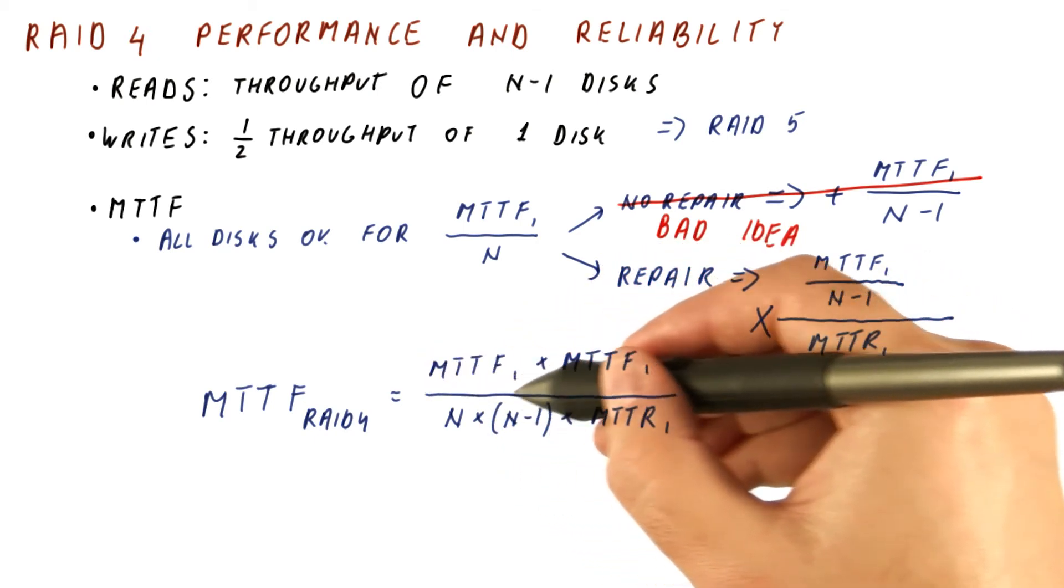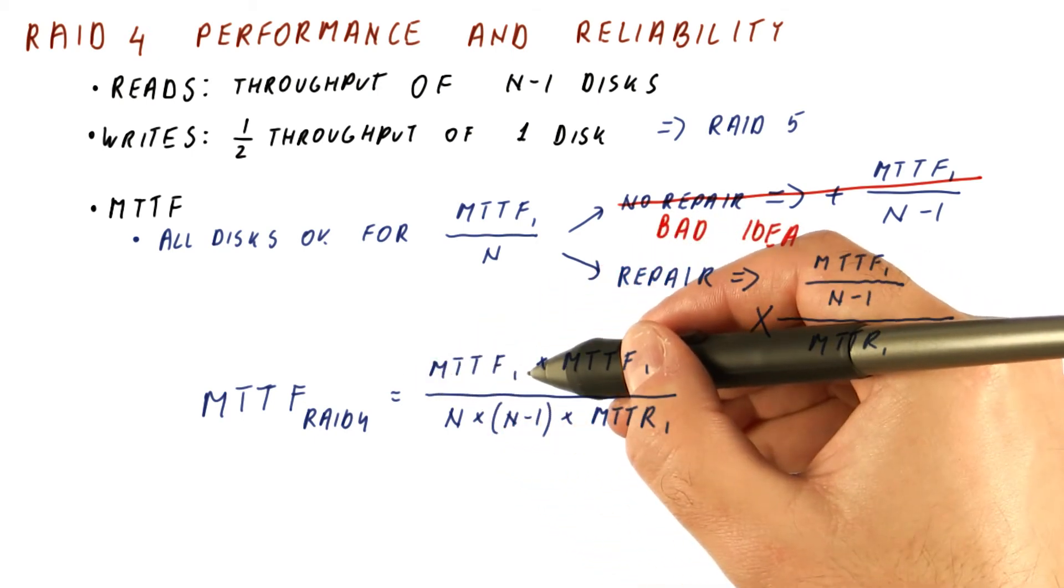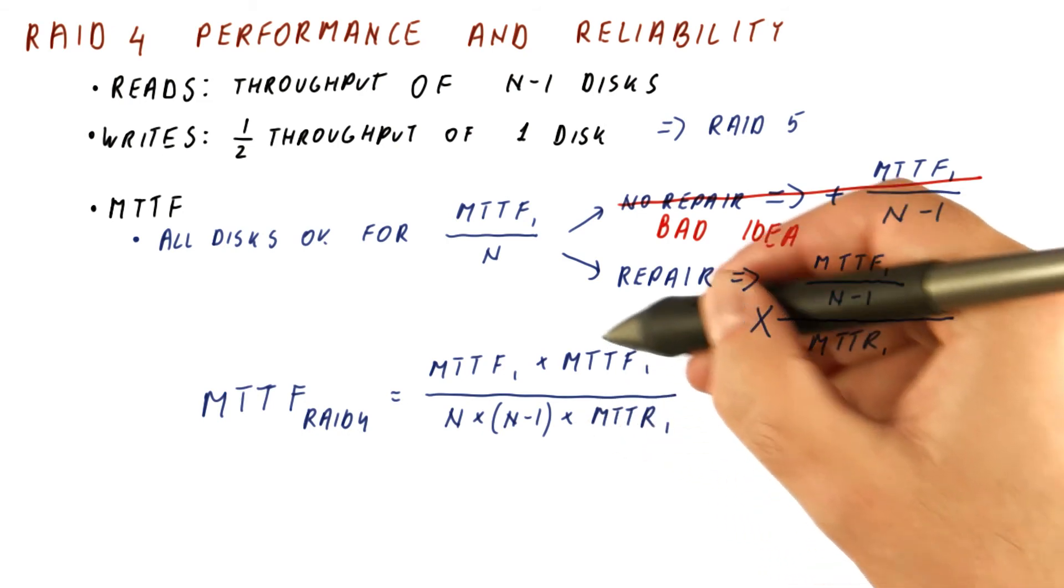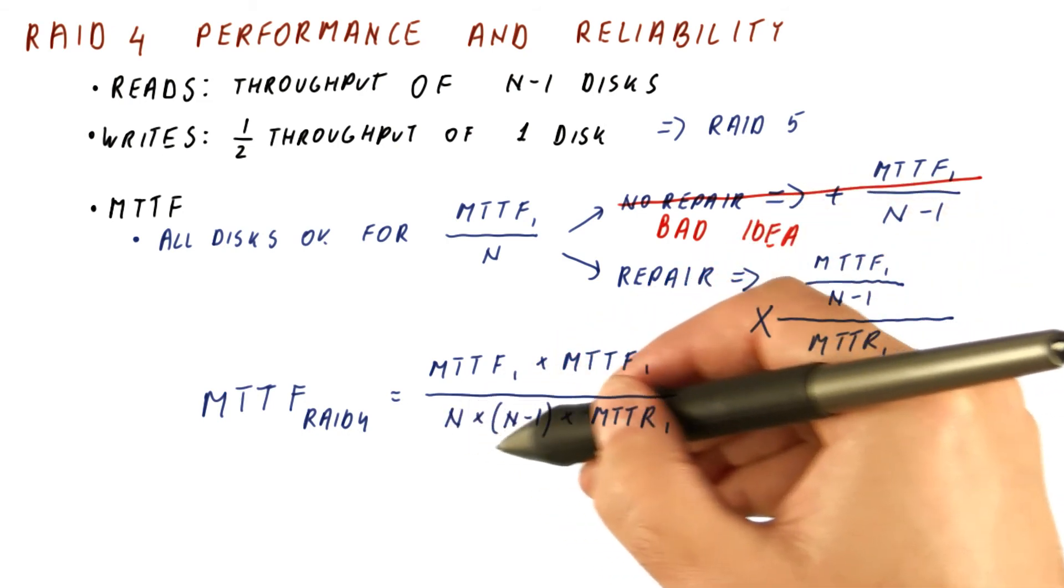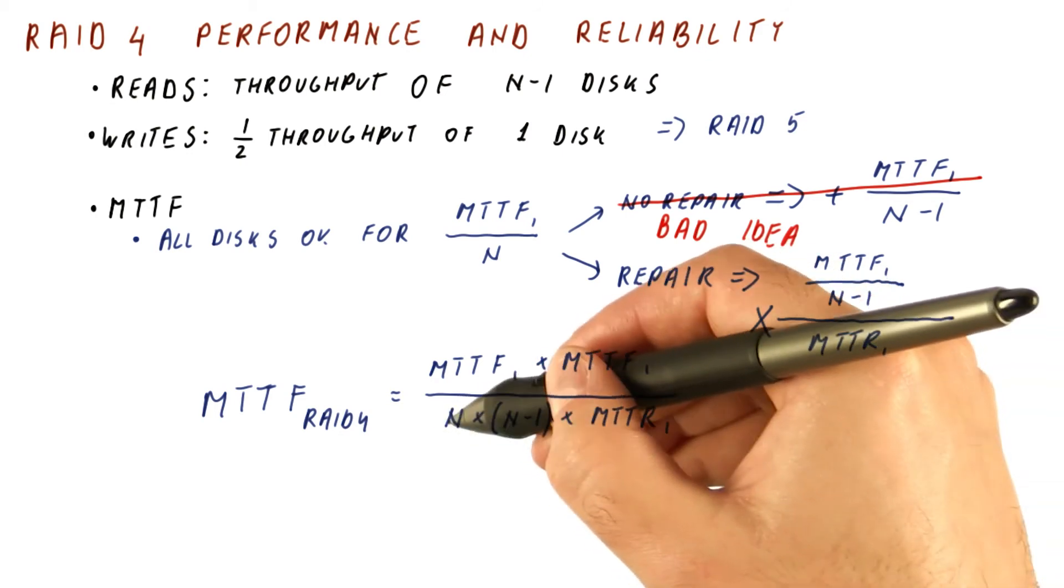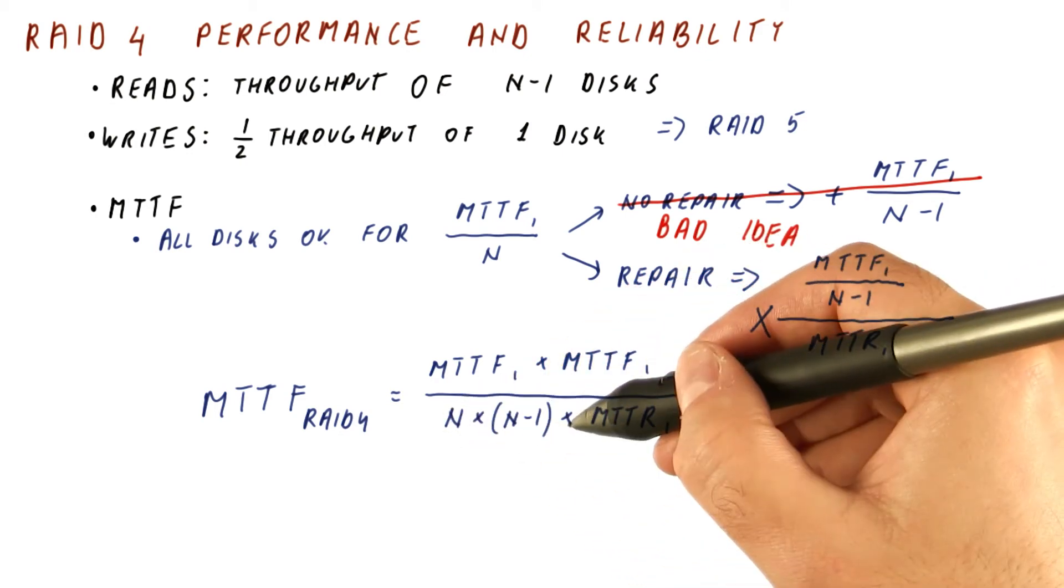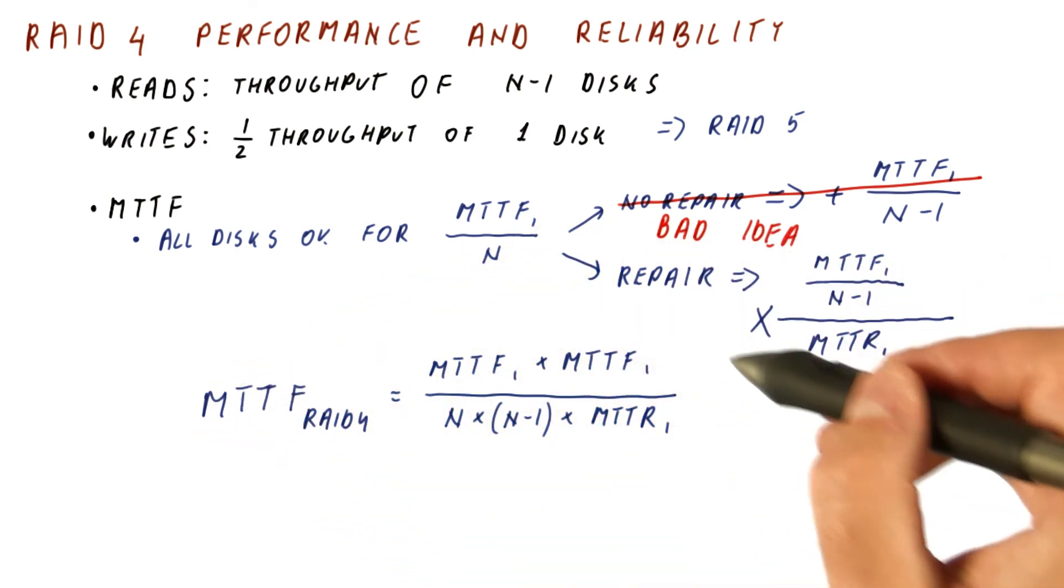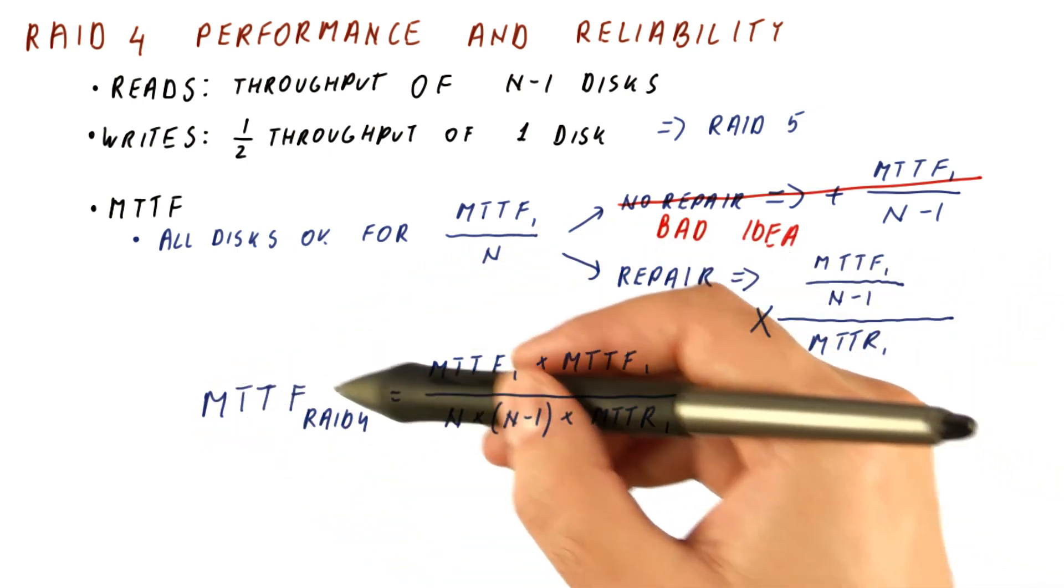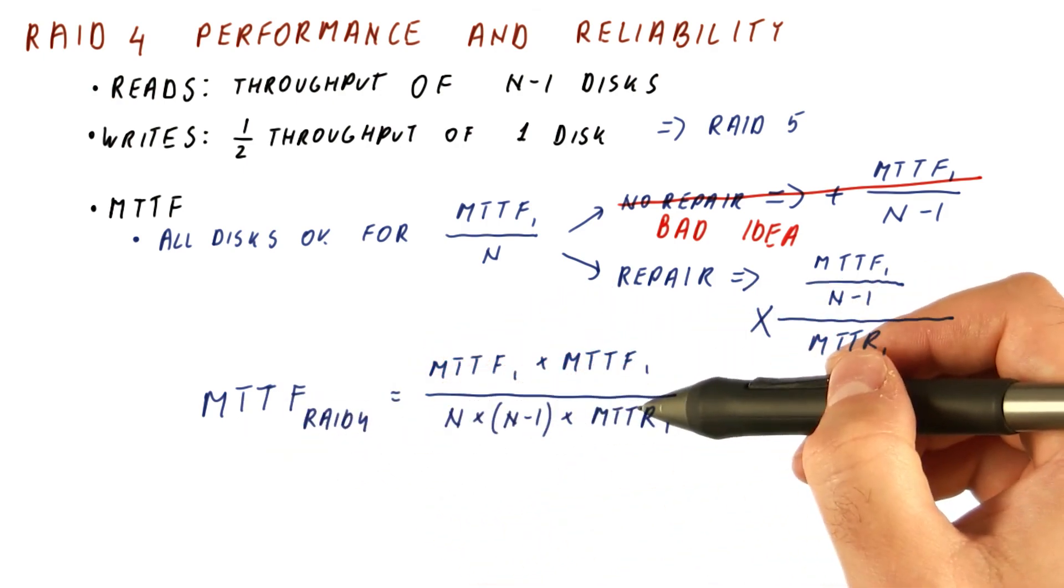If that is so, then what we get is the MTTF of a single disk that is fairly large, multiplied by something that is usually in the thousands or more, and divided by something that is usually something like, if it's four disks, it's going to be 12. So this MTTF of RAID4, if we repair the failed disk every time it fails, we get an MTTF that is still very, very large.